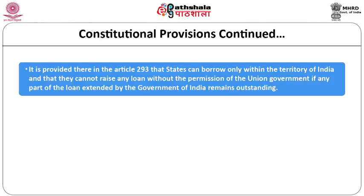If any amount of loan from the Government of India is outstanding against a state government, permission to borrow is mandatory. Almost all state governments have taken such loans, making this a control mechanism of the central government over states. States can also raise revenue from small savings schemes like the National Small Savings Fund (NSSF); the limit was earlier 100 percent and has now been reduced to 80 percent.